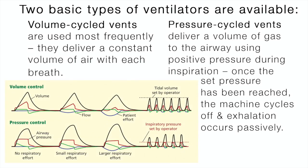There are two basic types of ventilators available: pressure-cycled ventilators and volume-cycled ventilators. Volume-cycled ventilators are used most frequently; they deliver a constant volume of air with each breath. Pressure-cycled ventilators deliver a volume of gas to the airway using positive pressure during inspiration. Once the set pressure has been reached, the machine cycles off and exhalation occurs passively. Our focus will be on volume-cycled ventilators, since they are used more frequently.